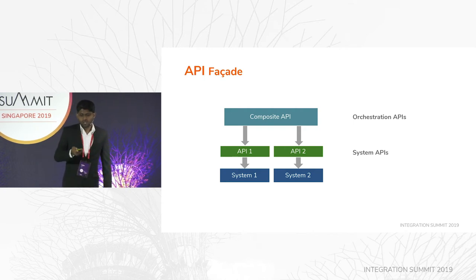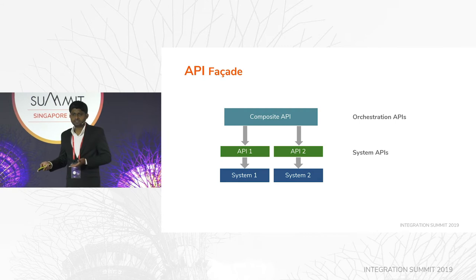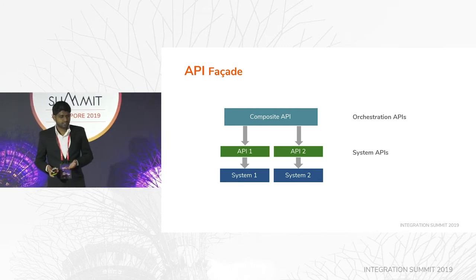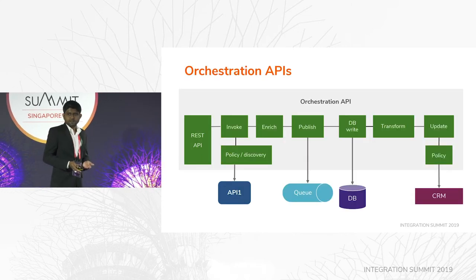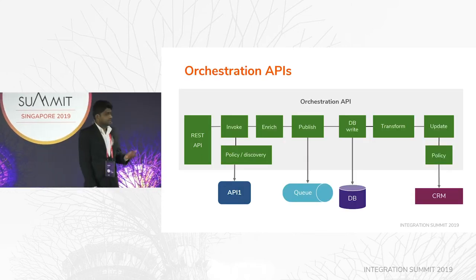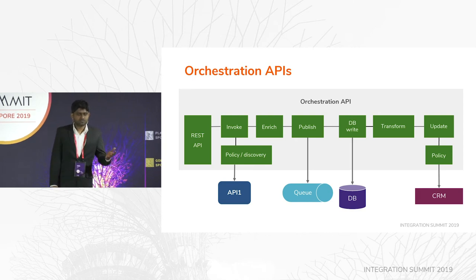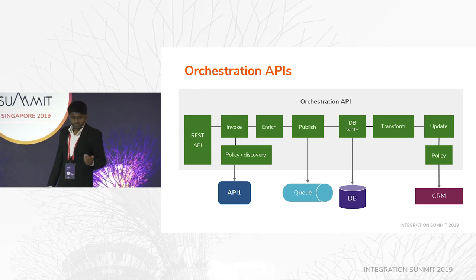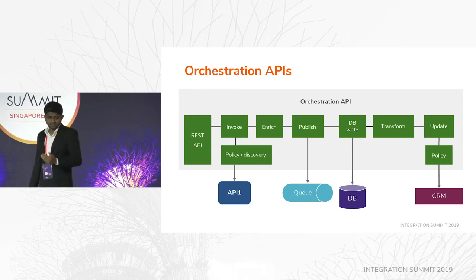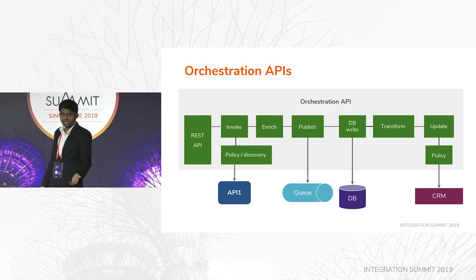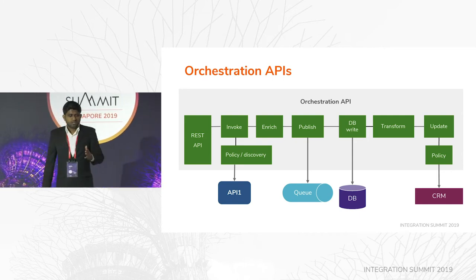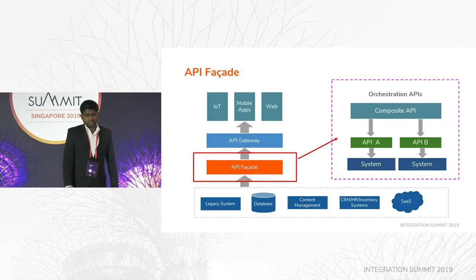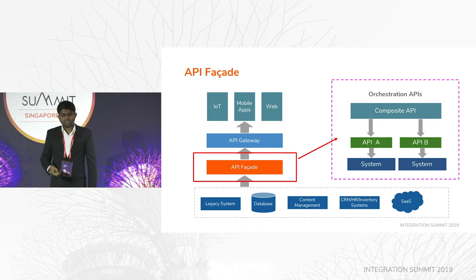Then you have a composite API that uses these system APIs. This is called the orchestration API. In a sample orchestration API, you have a RESTful API, it invokes a system API, and mind you there's a difference — we don't talk to all system APIs directly. There might be queue implementations, databases, CRM applications. This is an example of an orchestration API. The API facade is the integration part of our application.